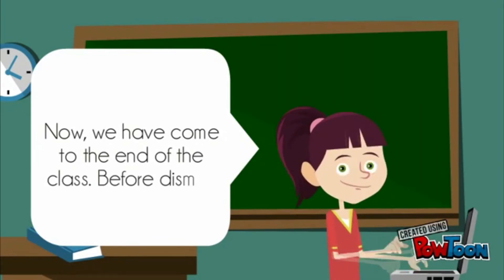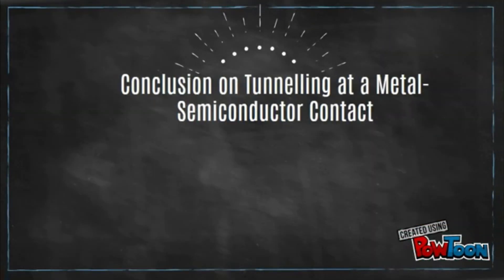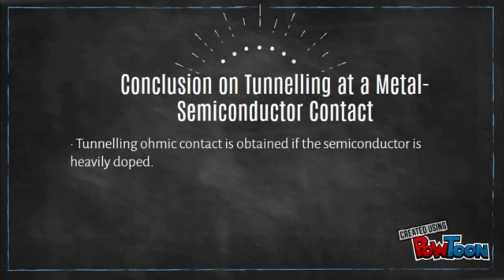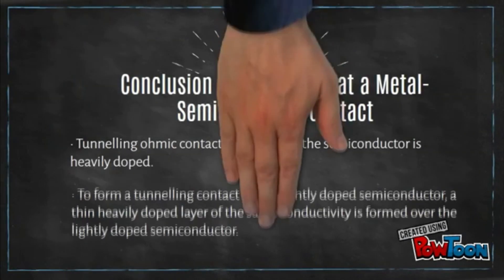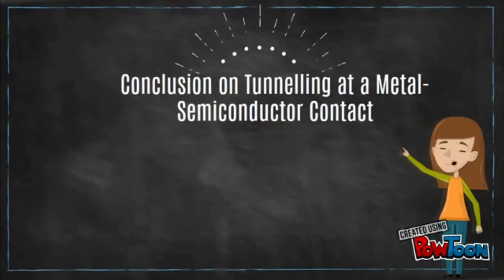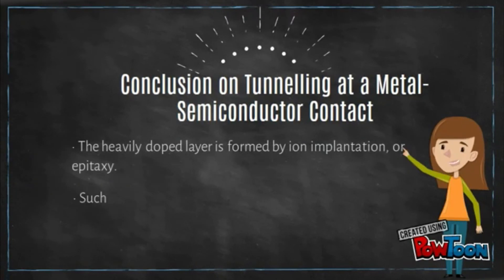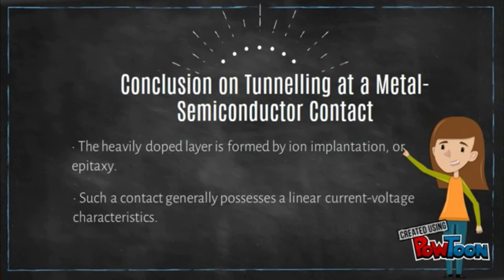We have come to the end of the class. As a conclusion, a tunneling ohmic contact is obtained if the semiconductor is heavily doped. Normally, the doping of the semiconductor is determined by other considerations, such as its function in a device. To form a tunneling contact to a lightly doped semiconductor, a heavily doped layer of the same conductivity is formed over the lightly doped semiconductor. The heavily doped layer is formed by ion implantation or epitaxy. Such a contact generally possesses a linear current-voltage characteristic.